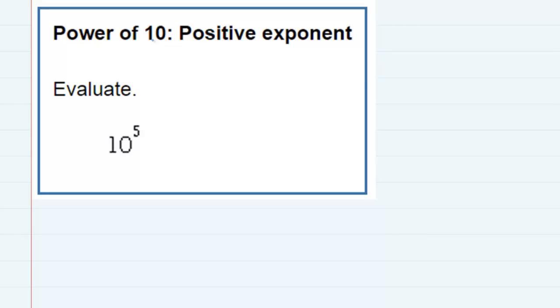Power of 10 positive exponent. We're asked to evaluate, and whenever we have a power of 10, meaning that 10 is our base, there's a very nice shortcut that we can use. The exponent that 10 is being raised to will actually tell us how many zeros.